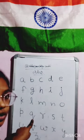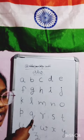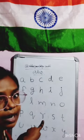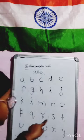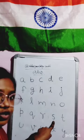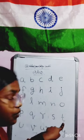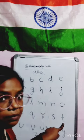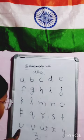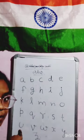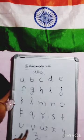Q for Queen, Queen means Rani. R for Rabbit, Rabbit means Khargosh. S for Ship, Ship means Jahaaj. T for Tiger, Tiger means Chita. U for Umbrella, Umbrella means Chhata.